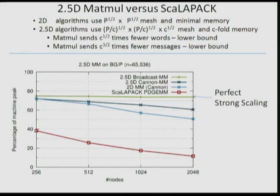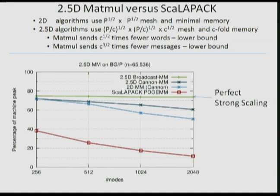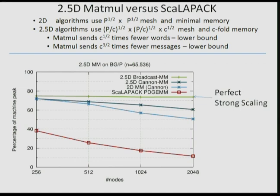On a 64k×64k matrix multiply on IBM BG/P at Argonne National Lab: the horizontal axis is number of nodes (each a multi-core chip), and the vertical axis is percent of machine peak. ScaLAPACK fits on 256 processors but gets slower and slower as you keep adding processors because it becomes communication-bound. The new algorithm shows a perfectly horizontal line at the top — perfect strong scaling — because communication costs go down proportionally to the number of processors. To get this to work we had to very carefully use the 3D torus interconnect on the IBM BG/P — every wire of that torus was busy. It did not work on a Cray, which has a different kind of network; you need the three-dimensional torus interconnect.